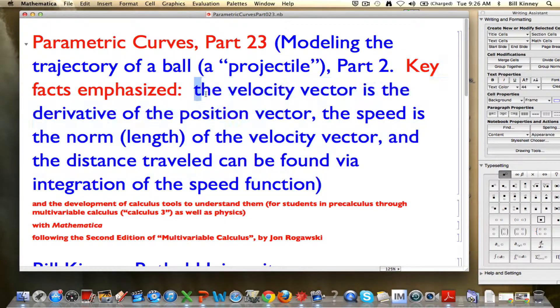The first fact is that the velocity vector of the motion is the derivative of the position vector. The speed of the motion is the norm, or the length, of the velocity vector, and the distance traveled can be found via integration of the speed function.